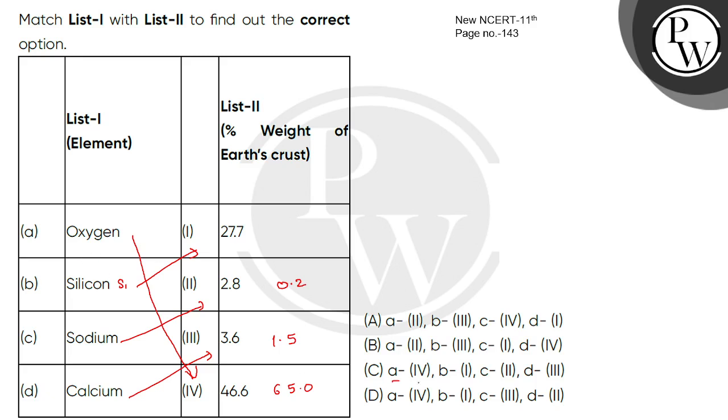A will come to 4, B will come to 1. C will come to 2, D will come to 3. Option C is correct.